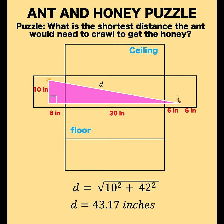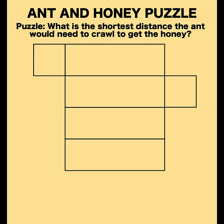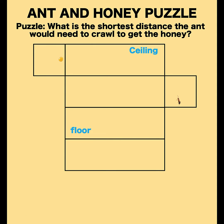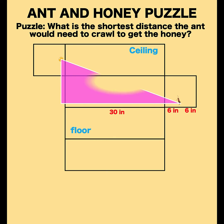So this must not be the correct answer. Let's try opening the box a different way. This is the ceiling and this is the floor. Here are the locations of the ant and the honey, and their dimensions.